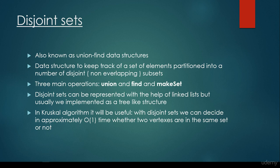This data structure supports three main operations: the union, the find, and the make set operations. Disjoint sets can be represented with the help of linked lists, but usually we implement it with the help of a tree-like structure.